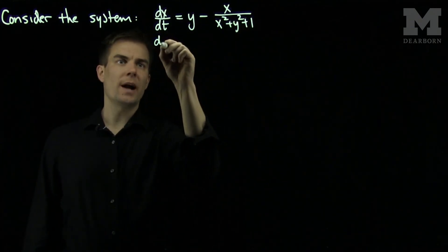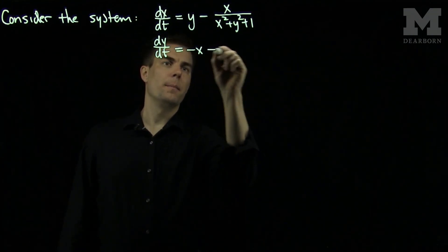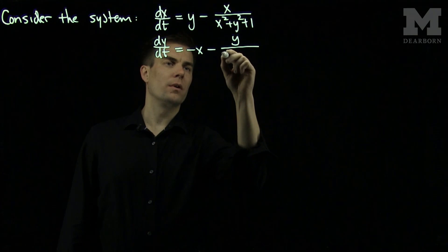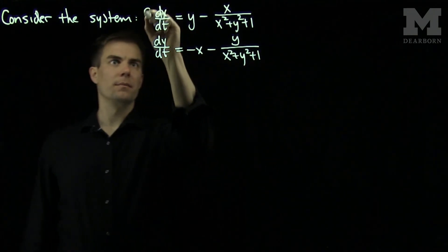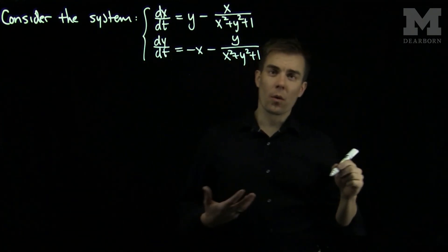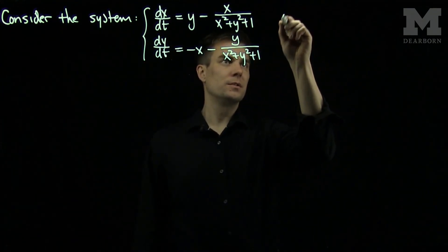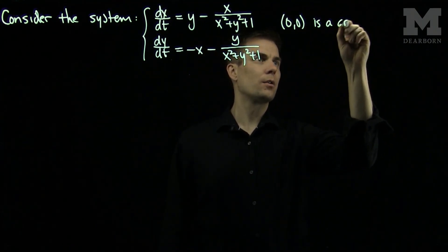And dy/dt = -x - y/(x² + y² + 1). Notice that for this system, the origin is a critical point. (0,0) is a critical point.